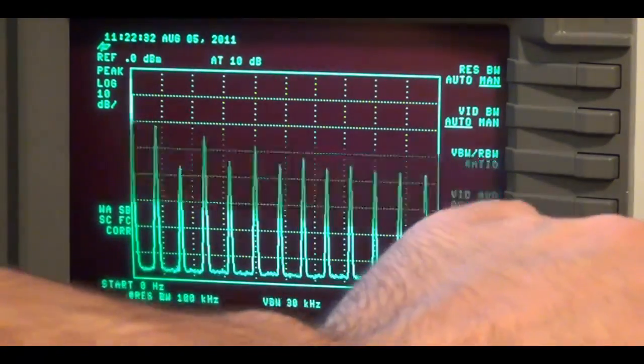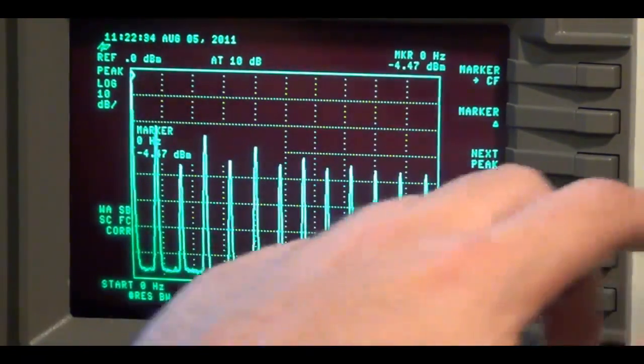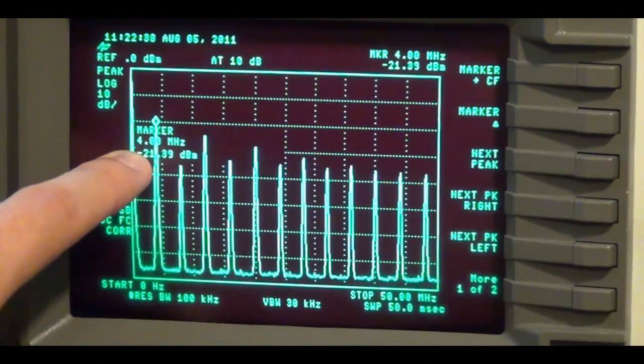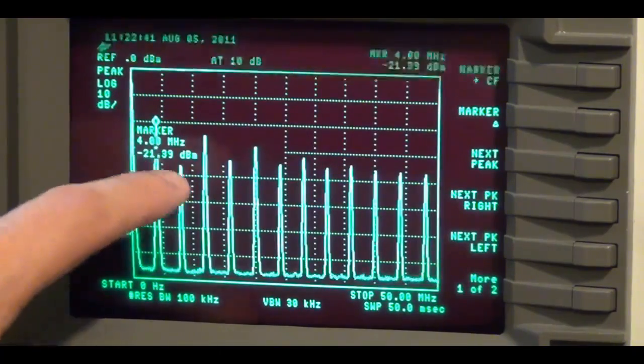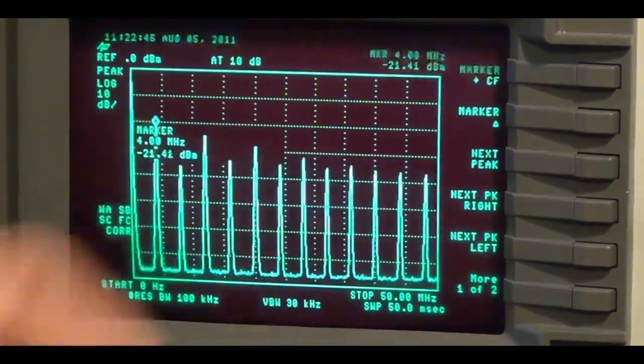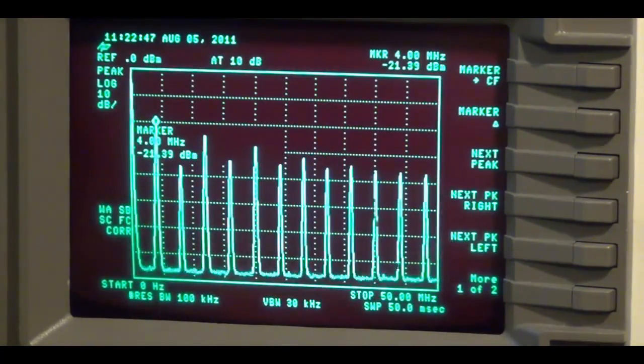So if I take a marker and I look at the peak, the peak of this signal is at 4 MHz. That's the frequency of oscillation. And the next peak is at 8. The next one after that is at 12. These are all the harmonics. The first, second, third, fourth, and so on.